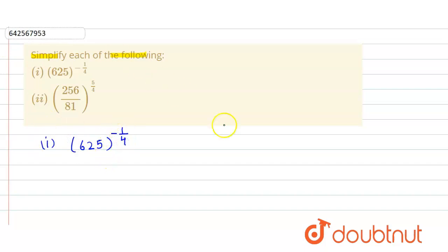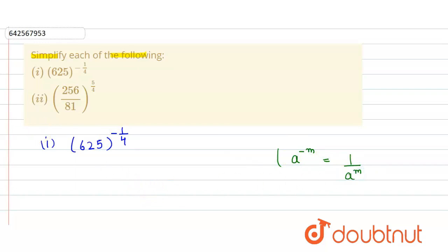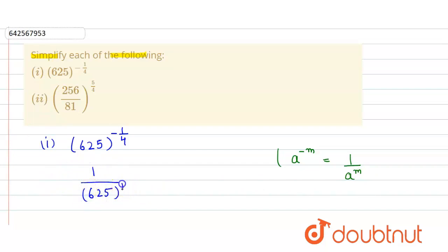Here we use the property of exponents according to which a raised to power minus m is equal to 1 divided by a raised to power m. So here that becomes 1 divided by 625 raised to power 1 by 4.